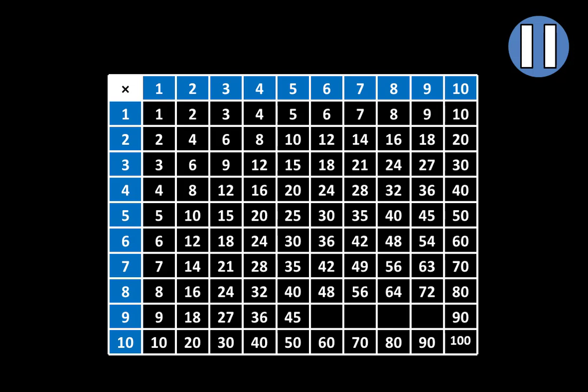Let's move to the next row. The first missing product is 54. The next missing product is 63. The next missing product is 72. And the final missing product on our table is 81.